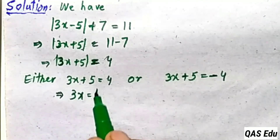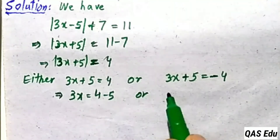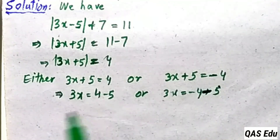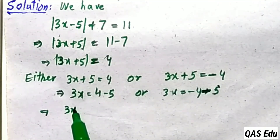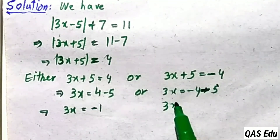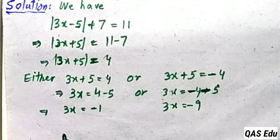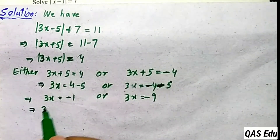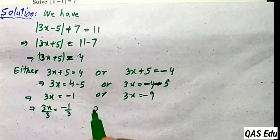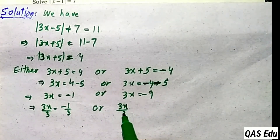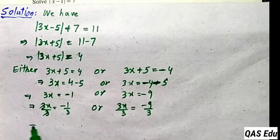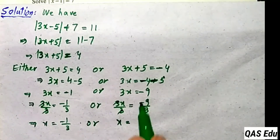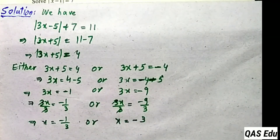Now two possibilities: either 3x plus 5 equals plus 4 or 3x plus 5 equals minus 4. Move plus 5 to the right as minus 5 in both equations. First: 4 minus 5 gives minus 1. Second: minus 4 minus 5 gives minus 9. Divide both equations by 3: x equals minus 1 over 3 and x equals minus 3.